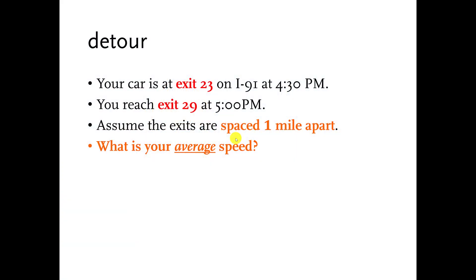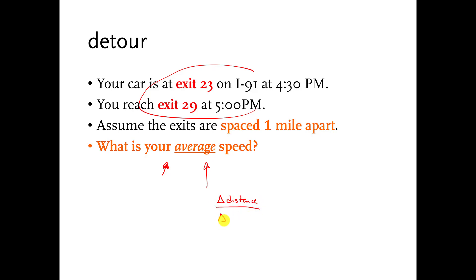This is a slide from the previous video where we calculated average speed in a car moving along a highway. To calculate the speed in that example, we calculated the change in distance and divided it by the change in time. Those Greek letter deltas mean change.